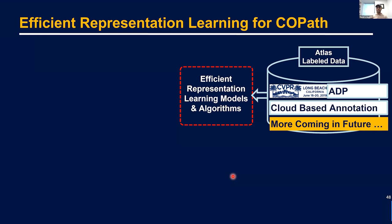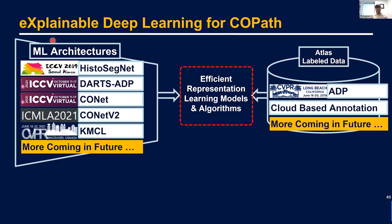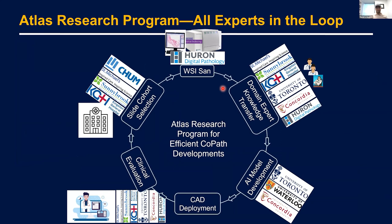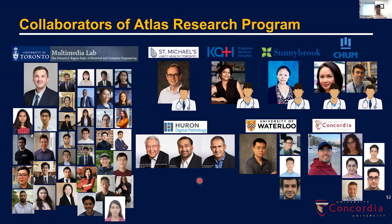My interest is really to develop efficient datasets for computational pathology, more efficient architectures to represent these models, and more meaningful optimization algorithms to blend them together for efficient representation learning. My ongoing collaborations include the University of Toronto, St. Michael's Hospital, Kingston General, Sunnybrook, Chum Hospital, University of Waterloo, and Huron Digital Pathology. I'm building my own lab at Concordia — I've hired half a dozen students and am actively hiring more. Hopefully in the next year or two, we will expand. Thanks so much — that's really the end of it.